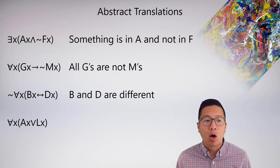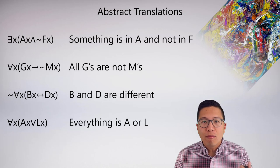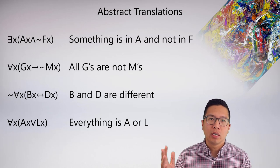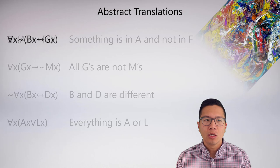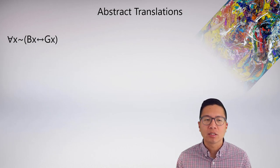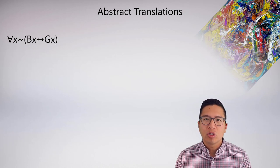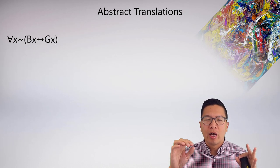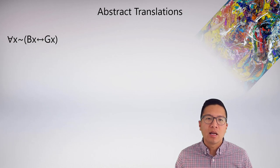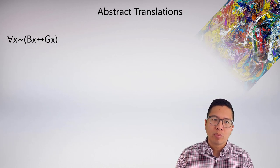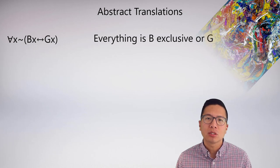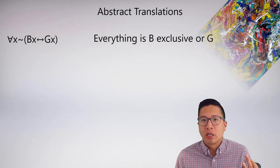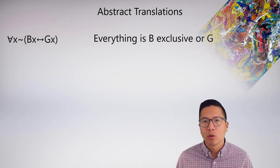Here's an example: 'for all x, ax or lx.' This isn't something we would naturally symbolize, but it really just means something straightforward — everything in the universe of discourse is a or it's l. Or is used in the regular inclusive sense, because that's how or always is in logic. Another example: 'for all x, negation bx biconditional gx.' If you're in b, then you're not in g, and if you're not in g, then you're in b — this amounts to the form of exclusive or. So everything in the universe of discourse is b or exclusively g, but not both.